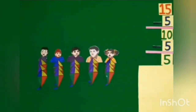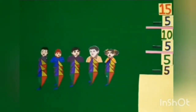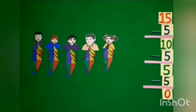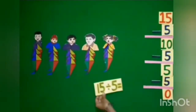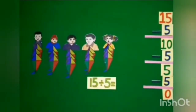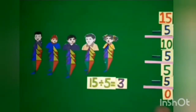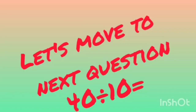When we subtract 5 kites from 5 kites, 5 minus 5 is equal to 0. We are left with no kite. We have done subtraction 3 times, so 15 divided by 5 is equal to 3. Each child gets 3 kites.